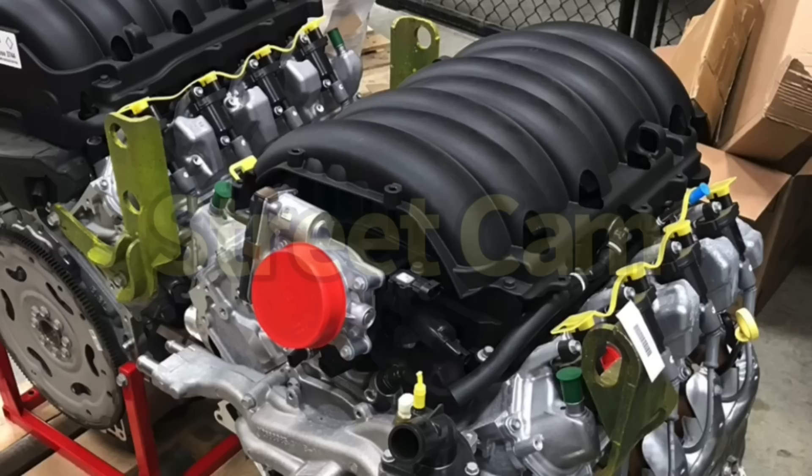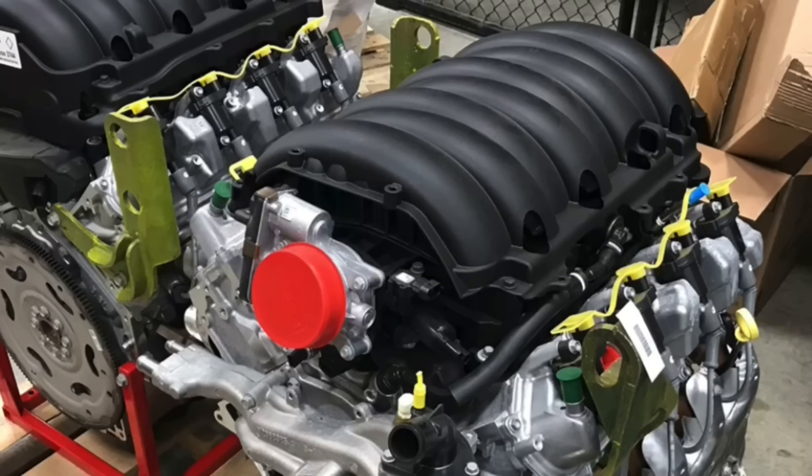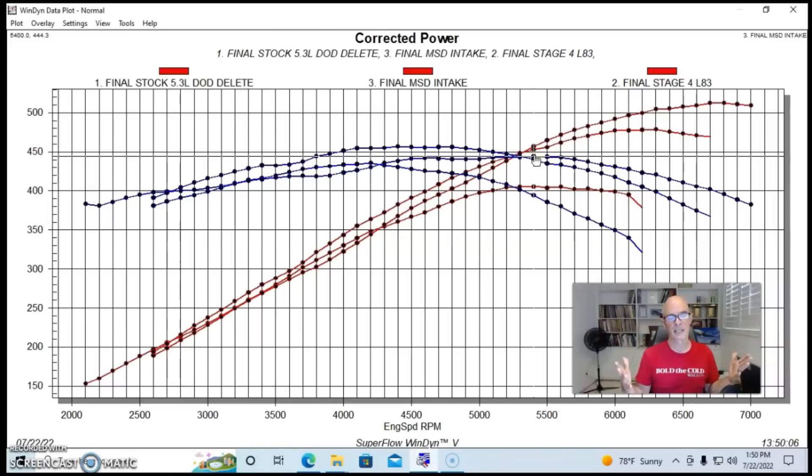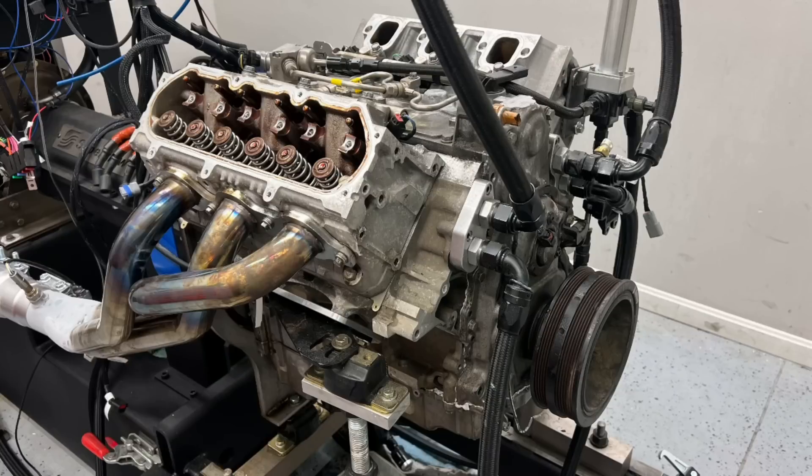But for most of us, I think for most guys having a 5.3, putting a cam in it with a long runner intake manifold, still probably the way to go. Now let's check out when they applied this cam technology to the LV3 4.3 liter V6.